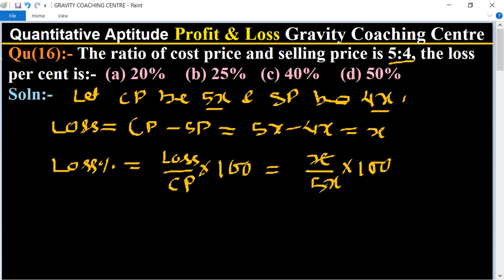So x cancels, and 100 divided by 5 is 20, so 20 percent is the loss percent. So option a is the correct answer.